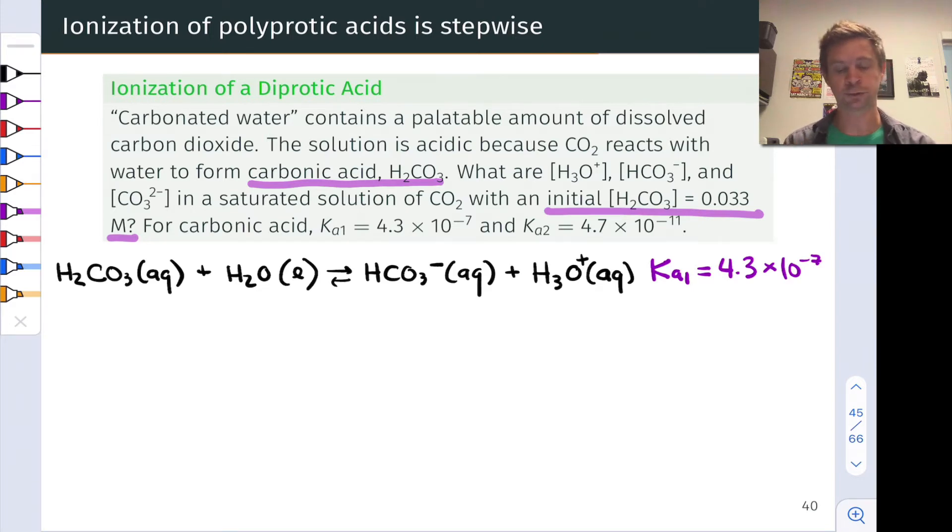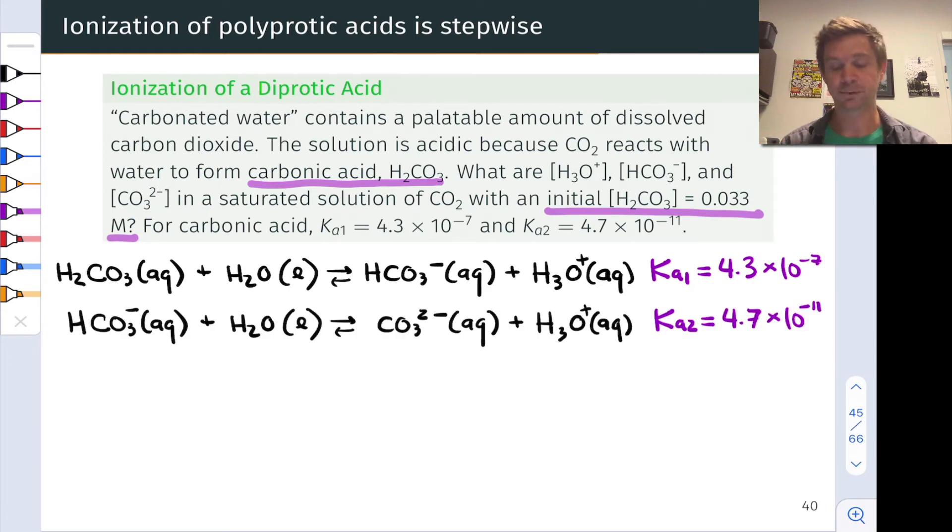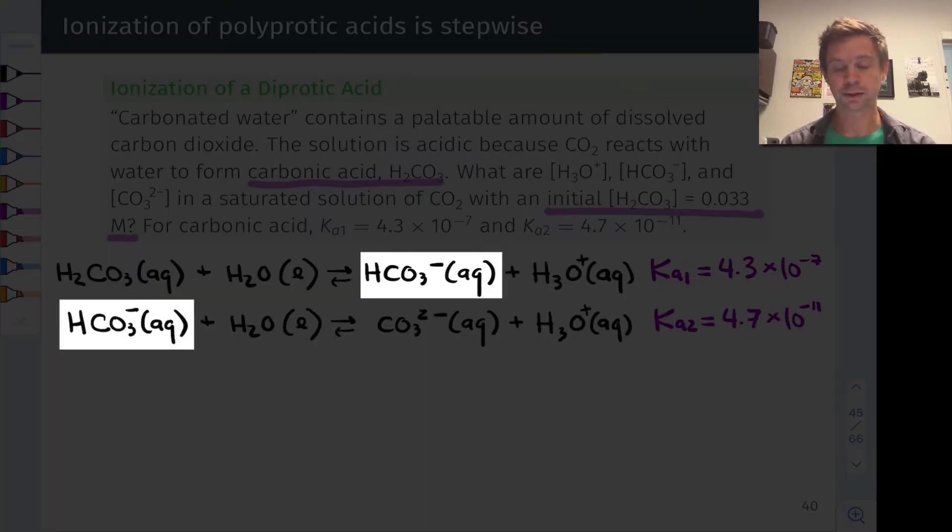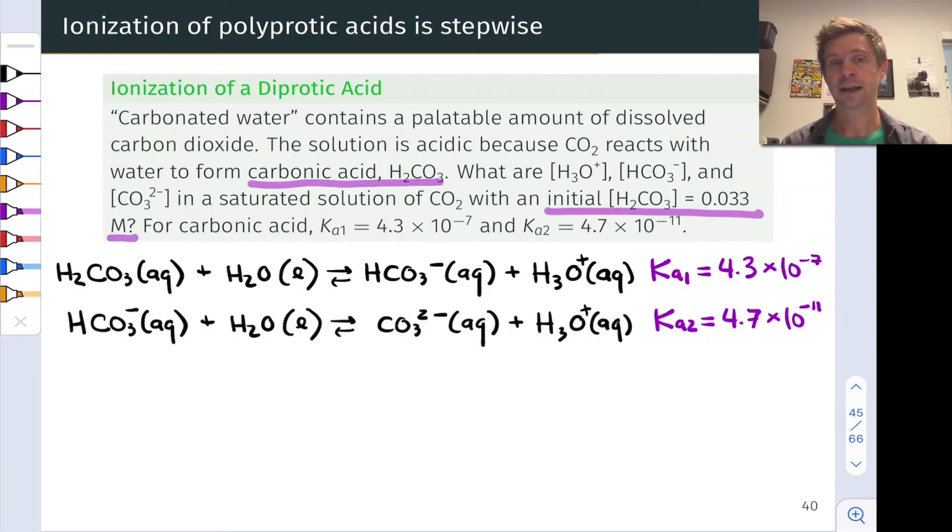H2CO3 can react with water to produce bicarbonate and hydronium ion. And that's got this Ka1 value of 4.3 times 10 to the negative 7. And then HCO3- (bicarbonate) can react with water to produce CO32- and H3O+. And as we're familiar with from the last video, we can see here that Ka2 is much, much smaller than Ka1. Bicarbonate is a much, much weaker acid than the neutral carbonic acid.